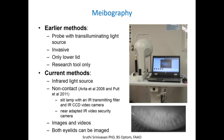Earlier methods of meibography were more invasive and meant to be a researcher's tool — mostly only lower lids could be imaged and it was quite invasive. Current methods normally use an infrared light source. There are other instruments besides the Keratograph 5 that offer meibography, including a slit lamp tool attached with an infrared transmitting filter and camera, and some researchers have adapted security cameras with infrared light for imaging meibomian glands. These devices can take images and videos of both upper and lower lids.